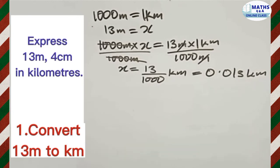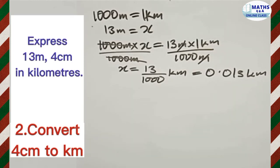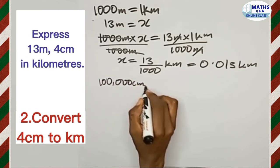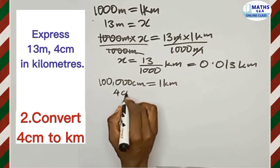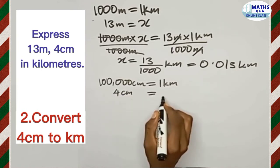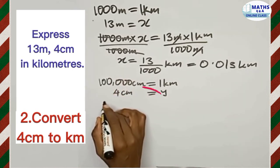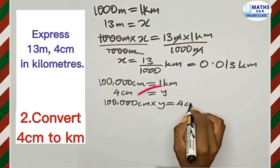This gives us 0.013 kilometers, so 13 meters equals 0.013 kilometers. Now we convert 4 centimeters into kilometers. A hundred thousand centimeters equals one kilometer. So if we have 4 centimeters, it will equal some number Y in kilometers. We perform the same cross-multiplication and make Y the subject.